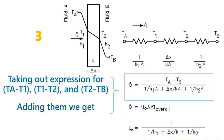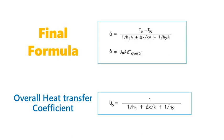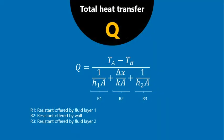This is the total heat transfer through the given system. The final formula can also be written as Q = U₀·A·ΔT_overall, where U is the overall heat transfer coefficient. The temperature difference (Ta − Tb) is the driving force, and the terms (1/H1A), (ΔX/KA), and (1/H2A) represent the thermal resistances R1, R2, and R3 offered by the system.